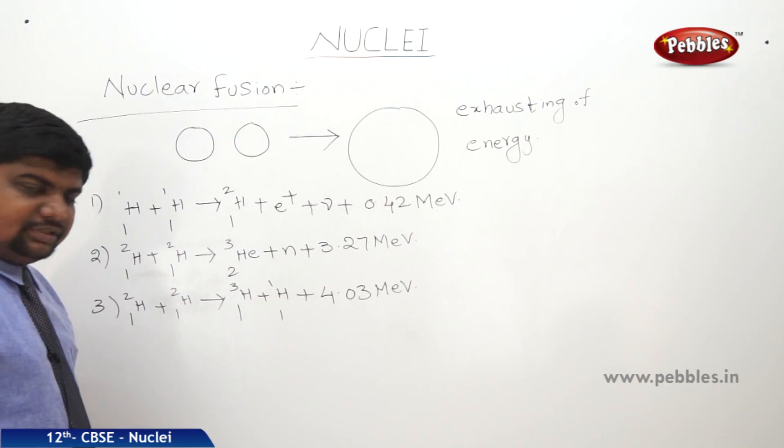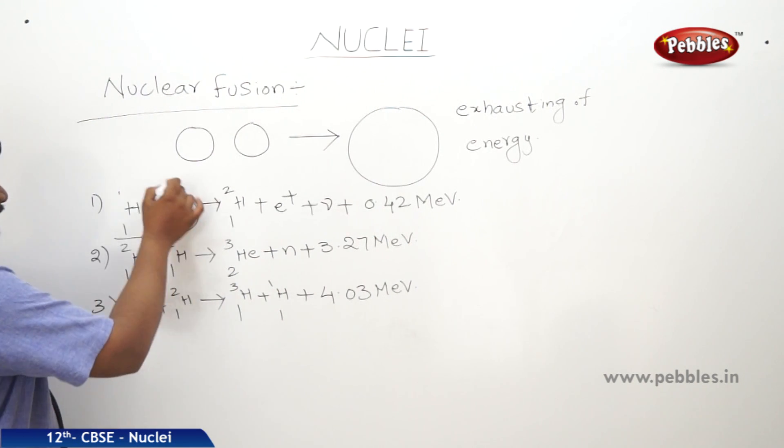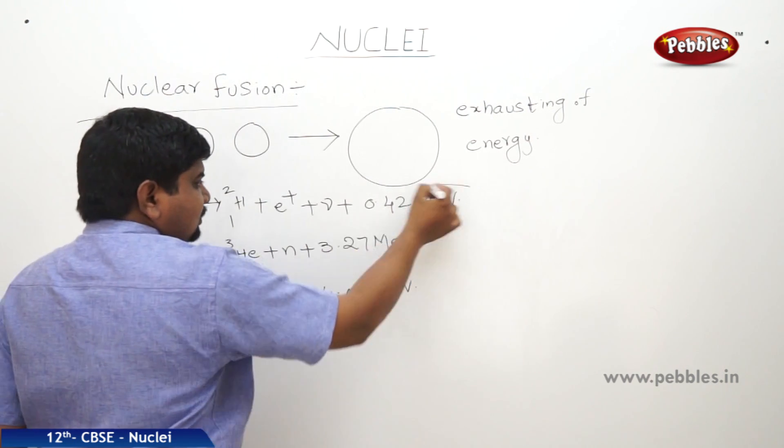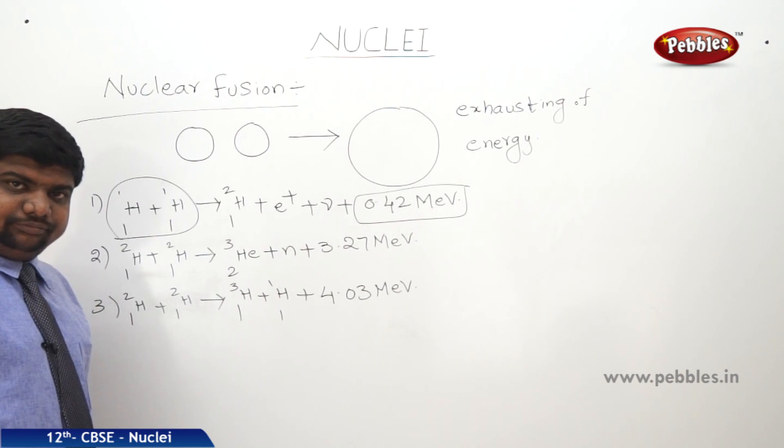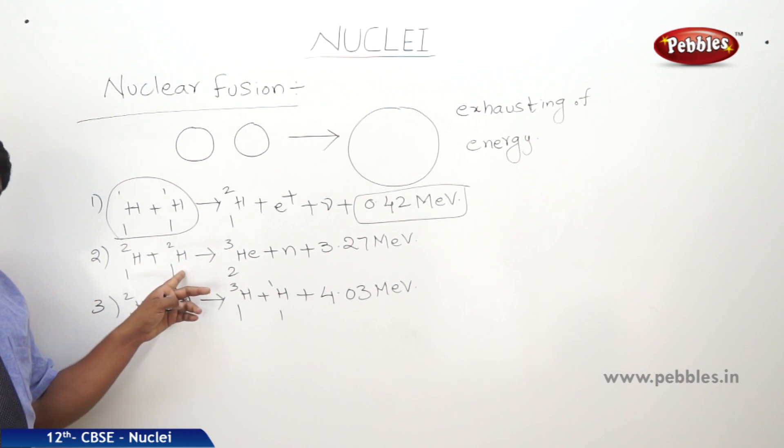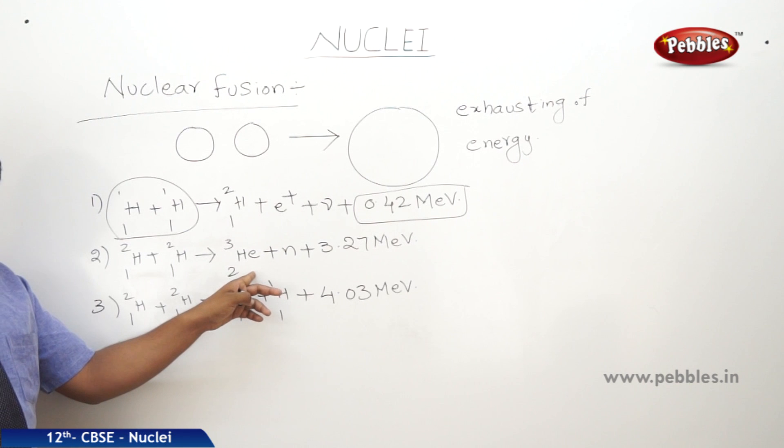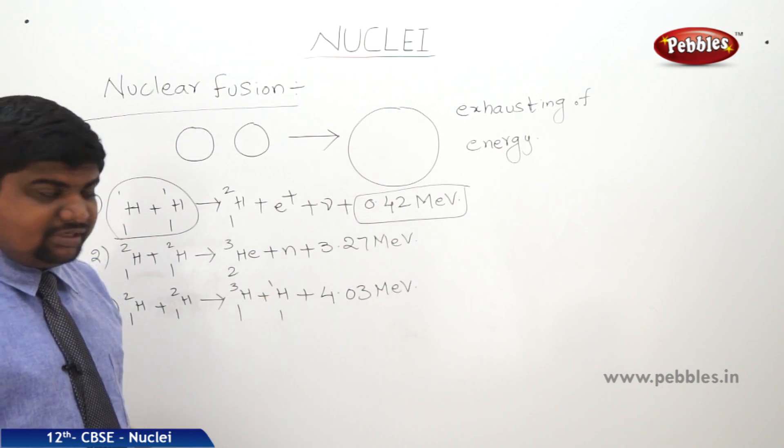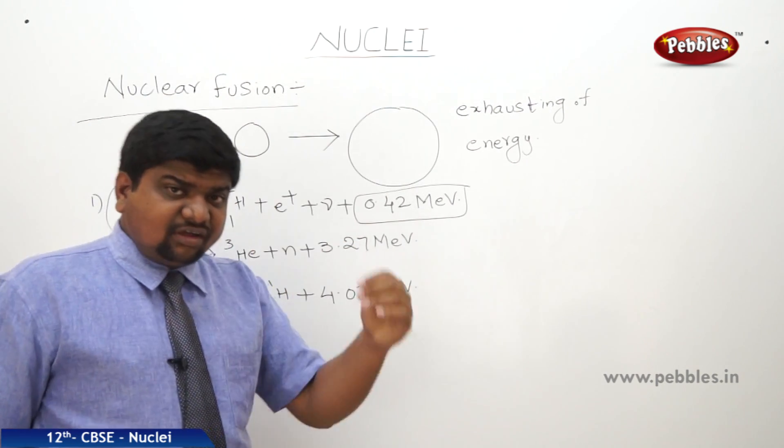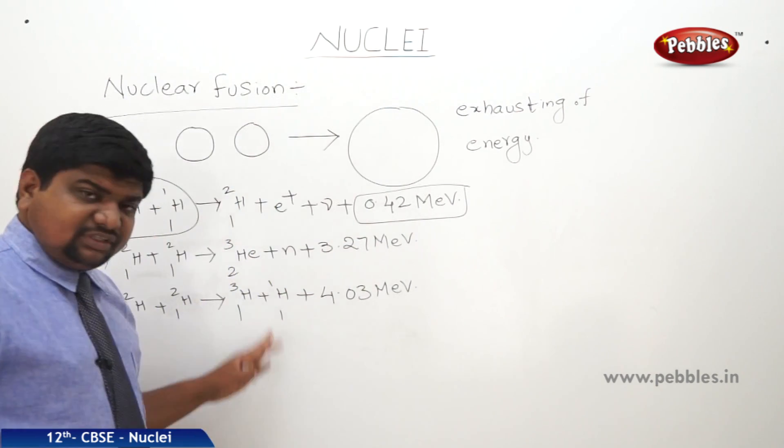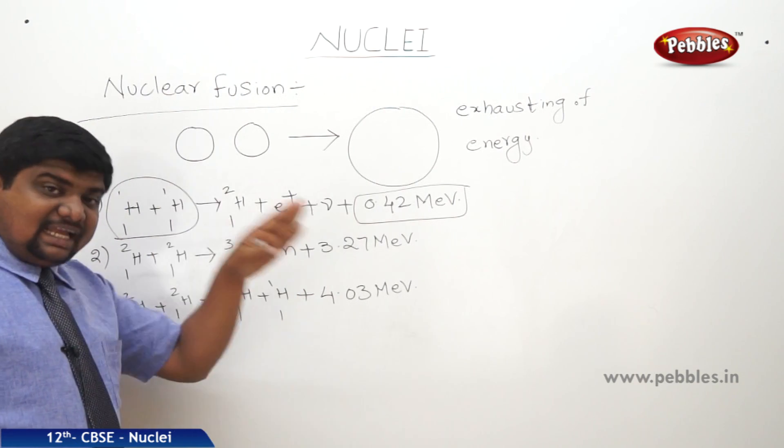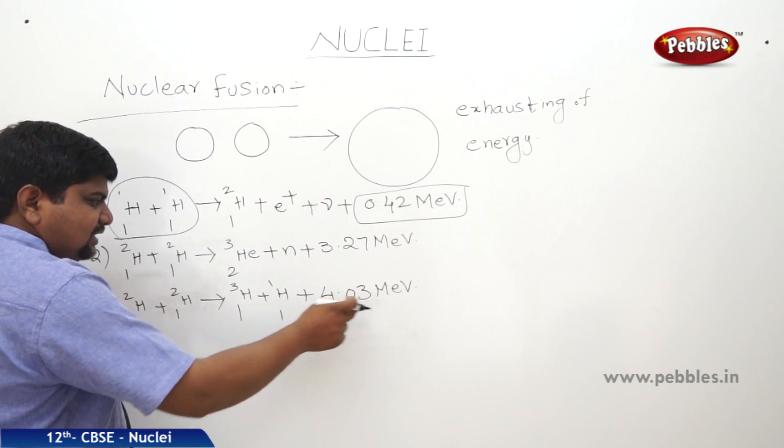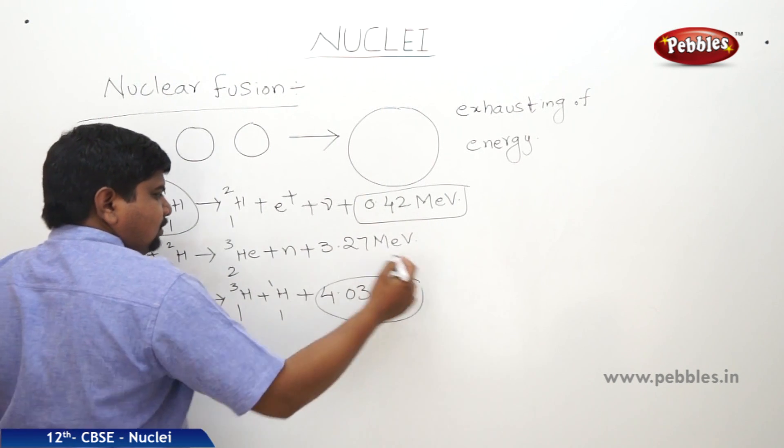See, on the left hand side, two small nuclei combine to form a big nucleus with the release of some energy. Here also, 1H2 plus 1H2 gives rise to 2He3, one of the isotopes of helium, plus neutron plus 3.27 MeV. In this type of nuclear fusion reactions, there is a possibility for the release of excited neutrons or electrons which have excess energy.